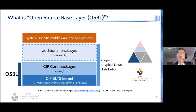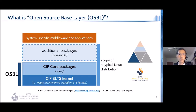You will notice that more packages — say hundreds of packages — are needed to develop real systems or devices. While CIP provides OSBL as commonly used building blocks, those additional packages should be added by users or provided by Linux distributors.